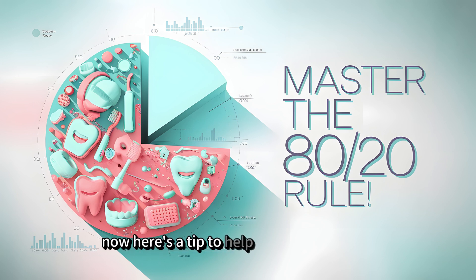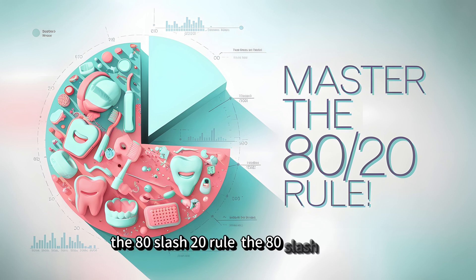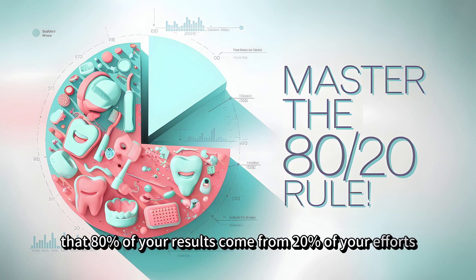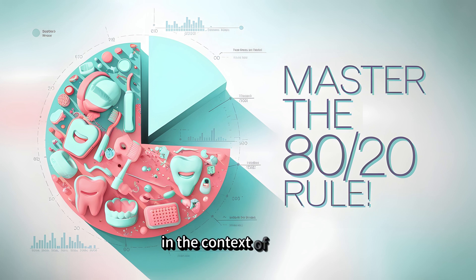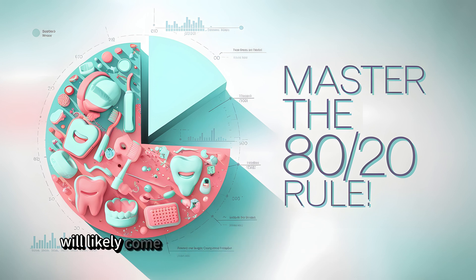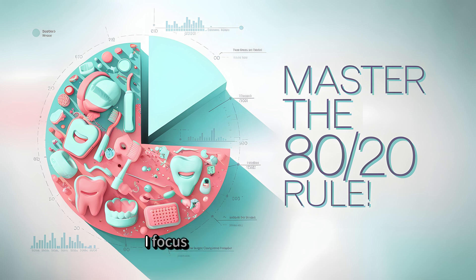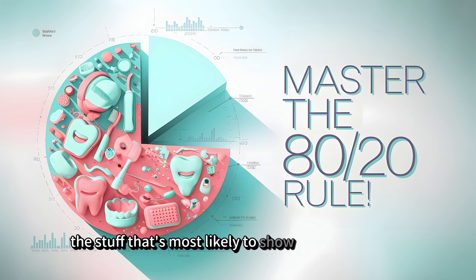Here's a tip to help you study smarter: the 80/20 rule. The 80/20 rule states that 80% of your results come from 20% of your efforts. In the context of the CSCE OSCE, about 80% of the exam questions will likely come from 20% of the most important topics. That's why here at Donut Dental I focus on high-yield material — the stuff that's most likely to show up on your exam.